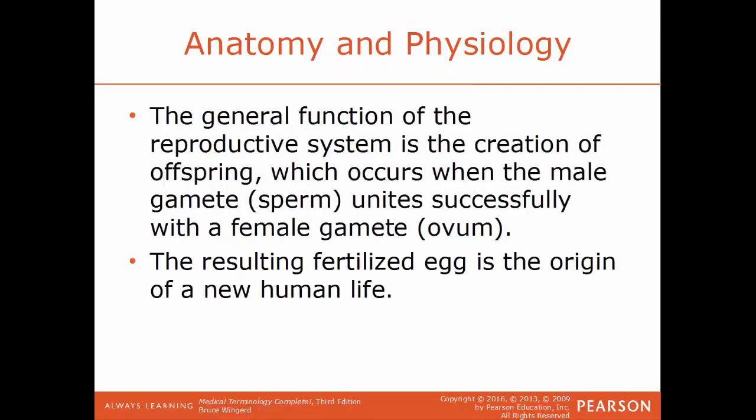Now I'll talk about some anatomy and physiology of the system. The general function of the reproductive system is the creation of offspring. This occurs when you have the union of two gametes — another term for a sex cell. The gamete from a male would be a sperm cell, and the gamete from a female would be the egg, also known as the ovum. The sperm fertilizes the egg, and that fertilized egg is the origin of a new human life.